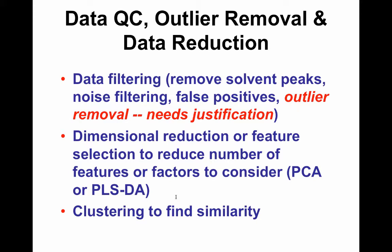Quality control, outlier removal, and data reduction are key steps. We get rid of solvent peaks in NMR and do noise filtering in mass spec and NMR. Outlier removal must be justified in your methods — you can't simply erase data. Hierarchical or k-means clustering rounds out the workflow. These are all parts of the standard steps, including dimensional reduction and feature selection.